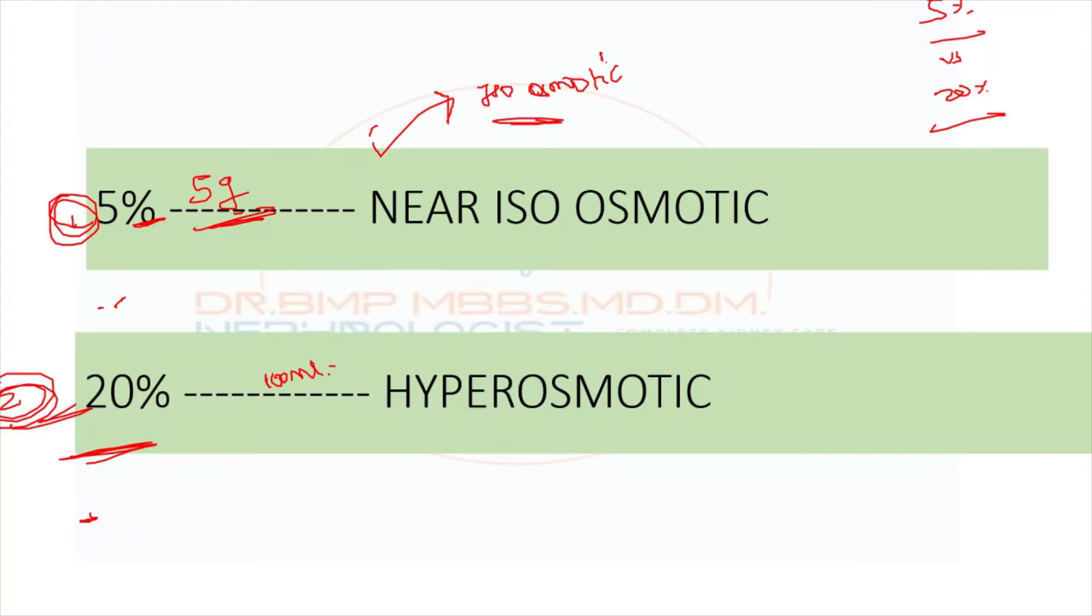Because if you have to deliver 20 grams of albumin, it can be delivered in 100 ml. Whereas if we want to give 20 grams of albumin using 5%, we have to give around 400 ml. That's why for plasma pheresis and all, 5% albumin is preferred, or in a CLD patient not in severe volume overload, isoosmotic can be preferred. 20% hyperosmotic, only if you think patient is severely volume overloaded.